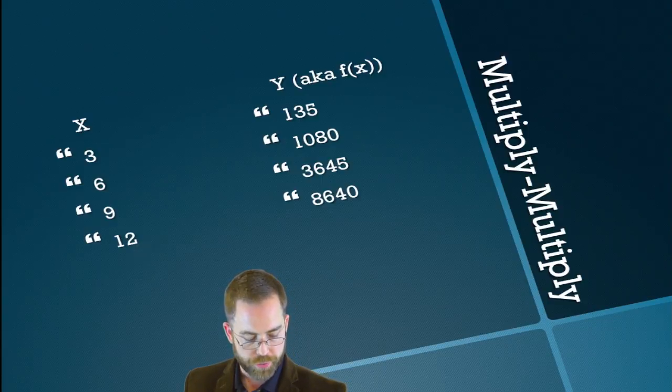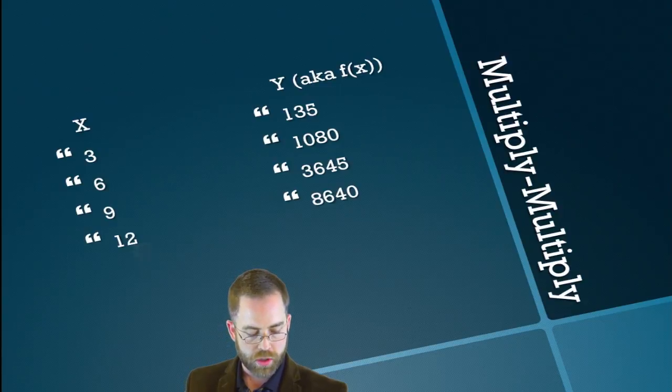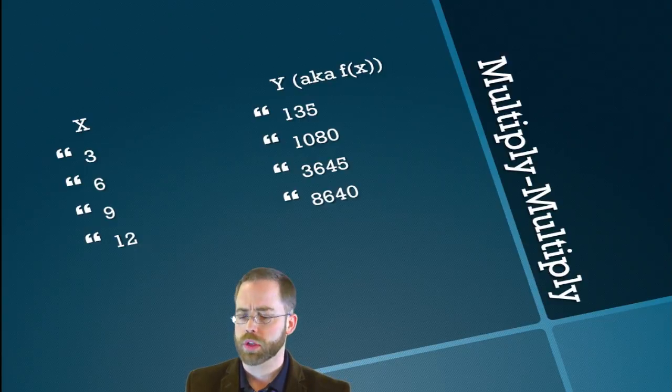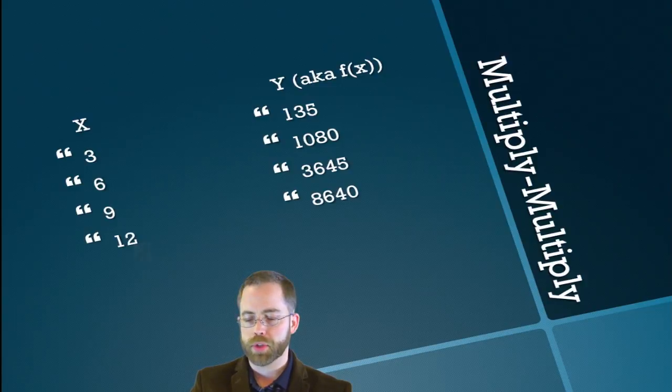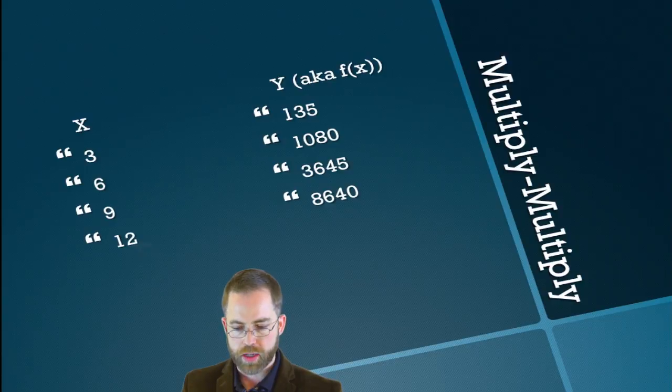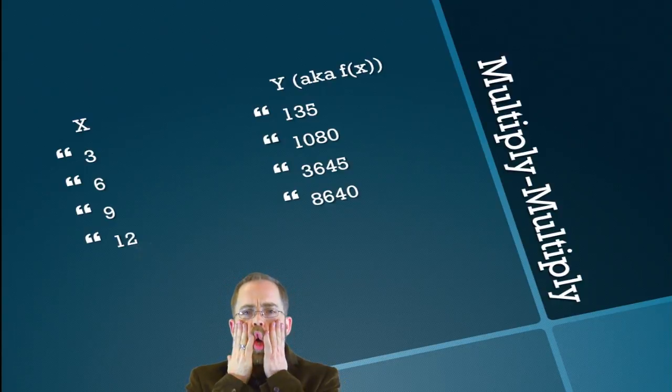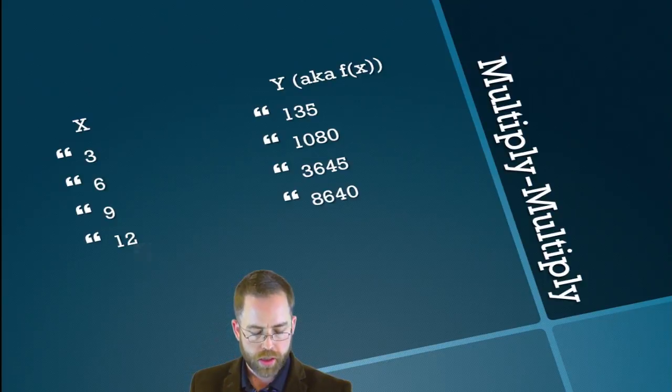So I try 3645 divided by 1080. Oh, frowny face. Not right. Not good. What's going on? But that next one, I think I see something pretty nice about that next one. 8640 divided by 1080. I'm skipping a term. Can you do that? That's 8. So what's the pattern?